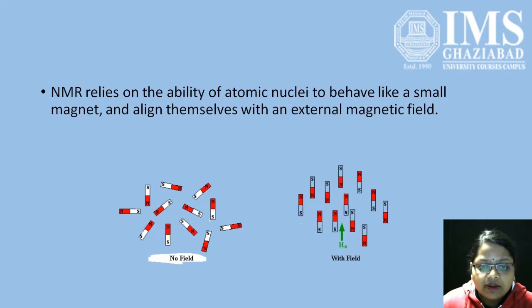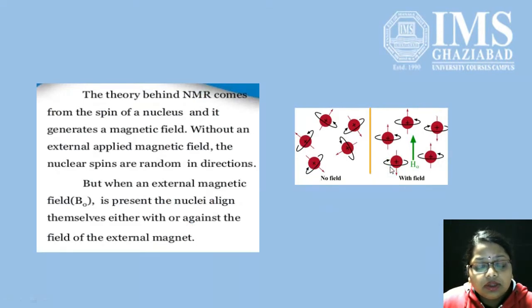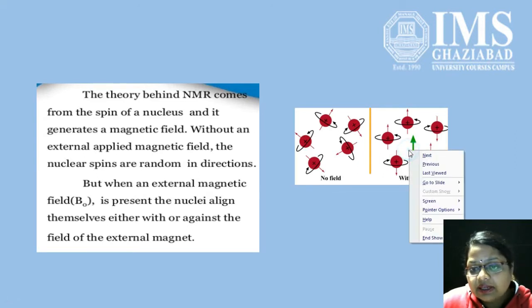We have the nucleus, and we have the magnetic field. We align the nucleus in the presence of the magnetic field. The theory behind NMR comes from the spin of the nucleus and how it generates a magnetic field because it is spinning and has a charge. Without an external applied field, the nuclei are spinning in random directions with no particular orientation. But when we apply an external magnetic field, these nuclei align themselves either with or against the field of the external magnetic field.